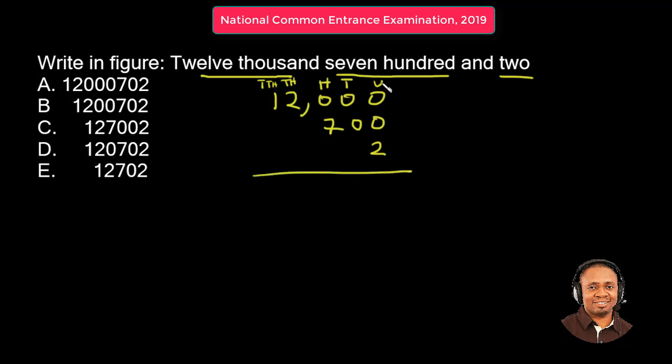So now, let us add up the numbers. Because 2 added up to 700, added up to 12,000. That's how we have 12,702.